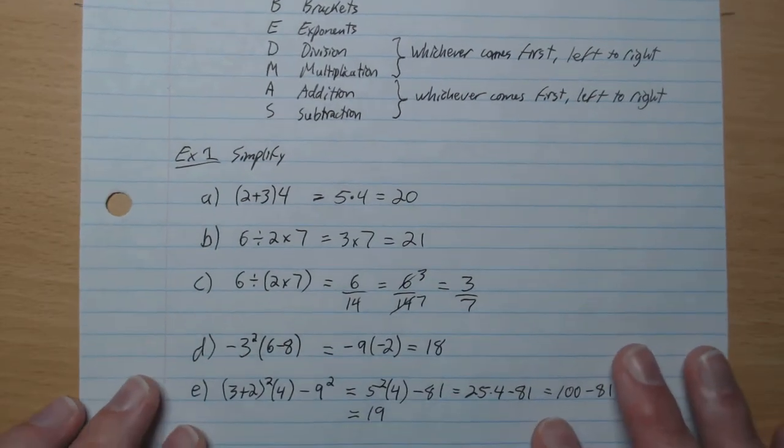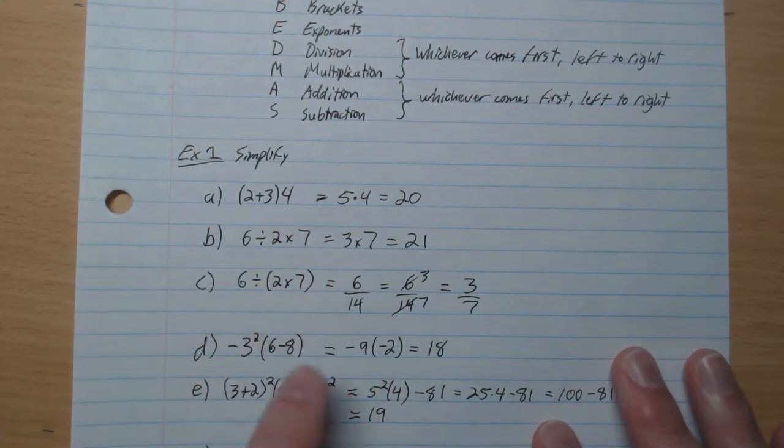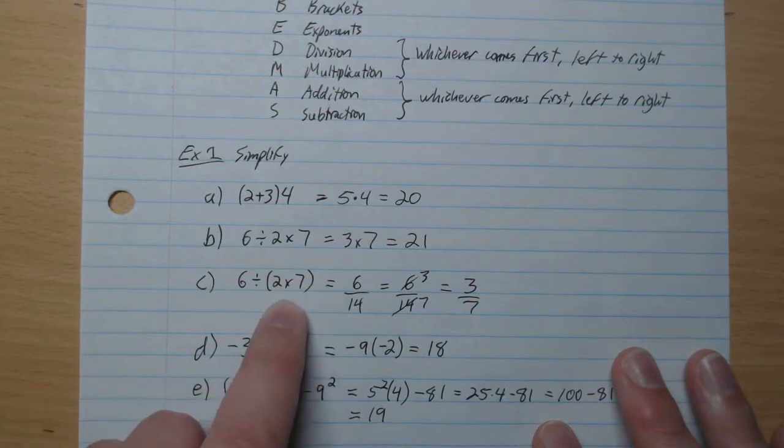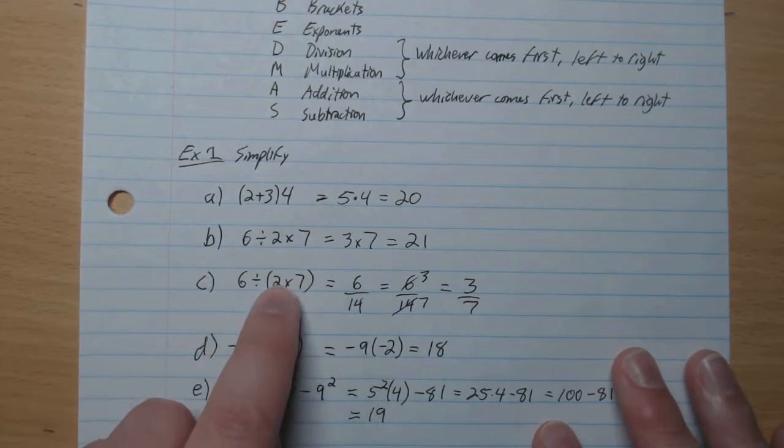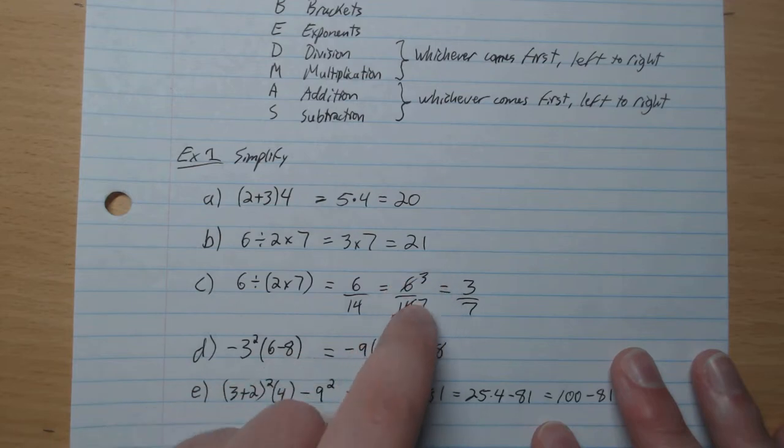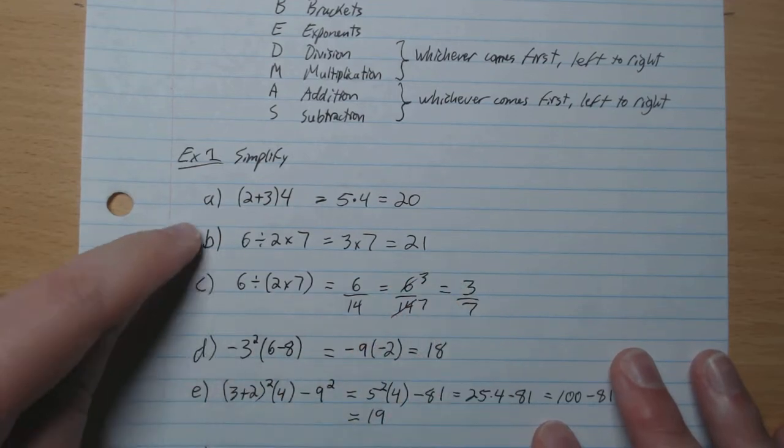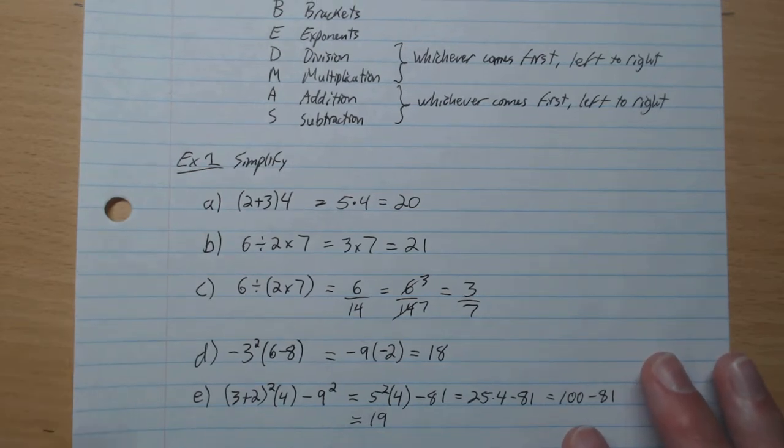And so you'll notice that C, we put some brackets here, and we're going to get a different answer. So we're going to start with 2 times 7, which gives 14. So we have 6 divided by 14. And now we have 2 in common, so we cancel that out. And we get 3 over 7 as our final answer. So it's not the same. So brackets are important when you're going to communicate the mathematical expression.